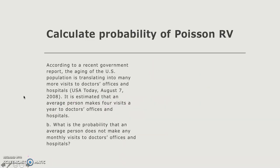The second question from the same case is: what is the probability that an average person does not make any monthly visit to doctor's office and hospital? So here we have x equals 0, does not make any visit. And the formula to calculate the probability of random variable for the Poisson distribution is this.